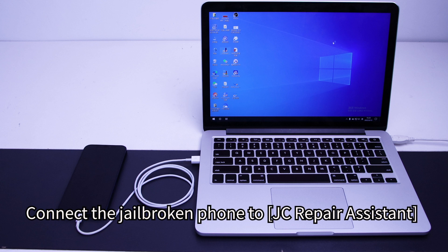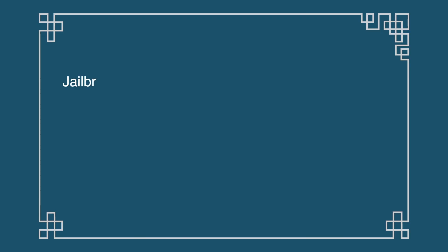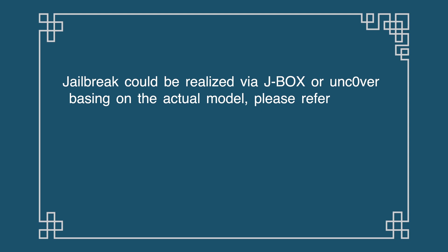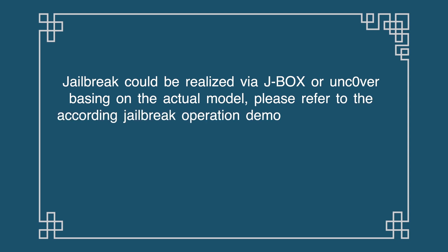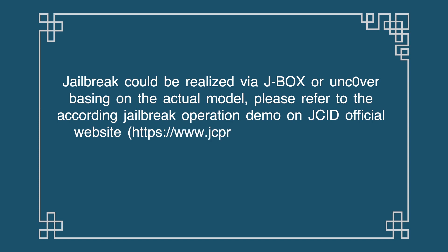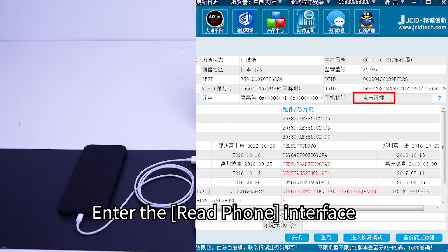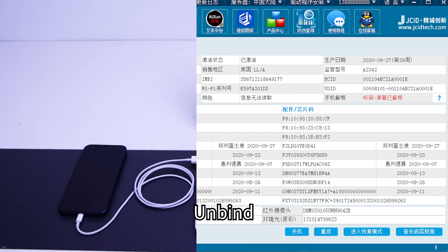Connect the jailbroken phone to JC Repair Assistant. Enter the Read Phone interface and click Unbind.